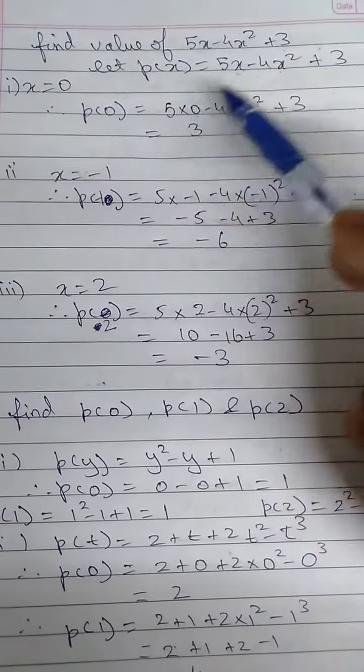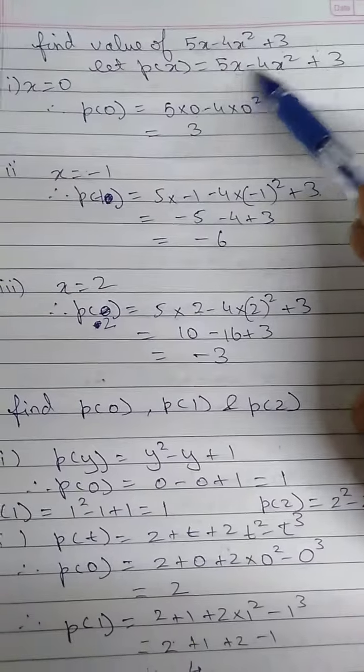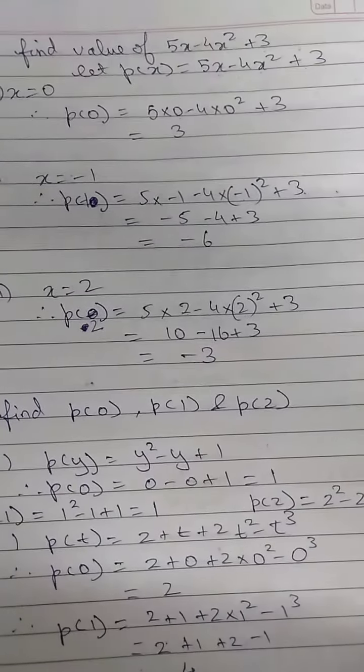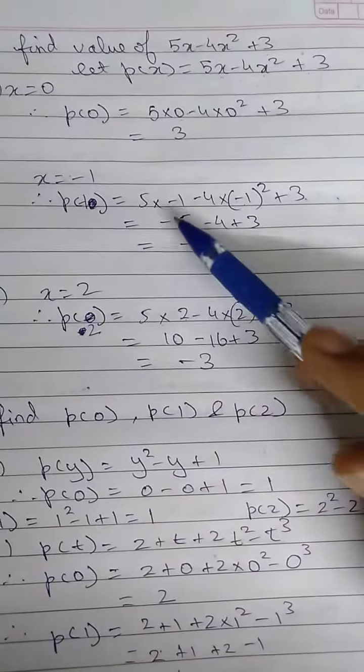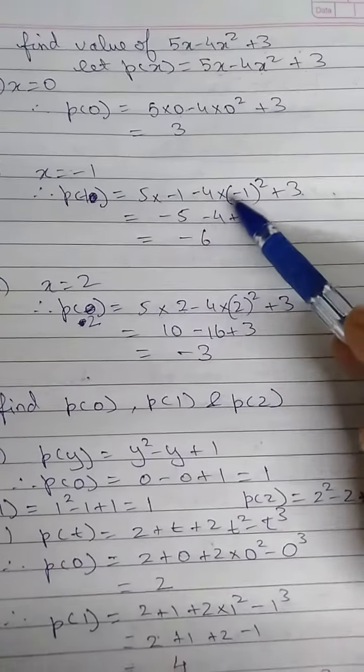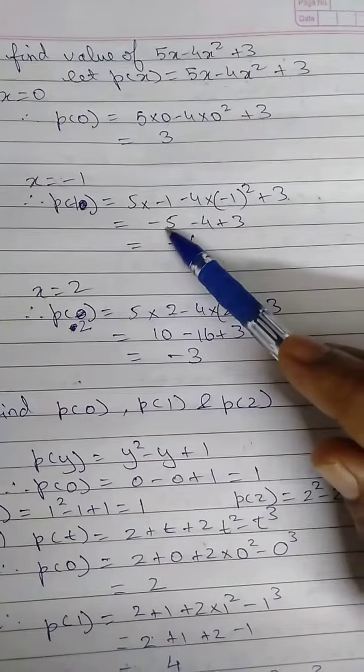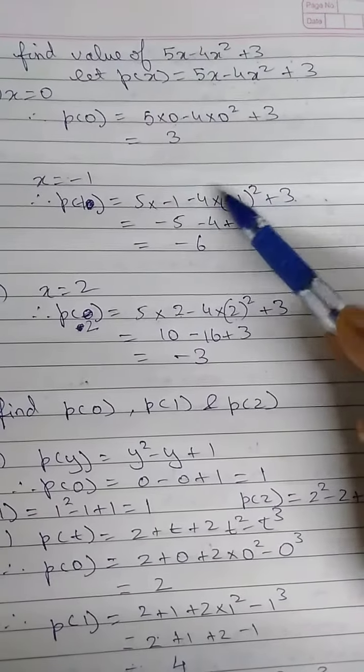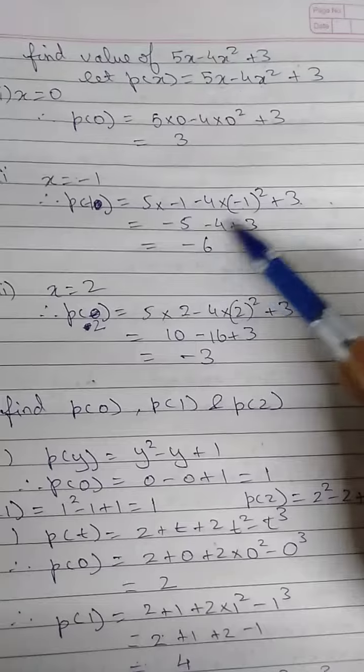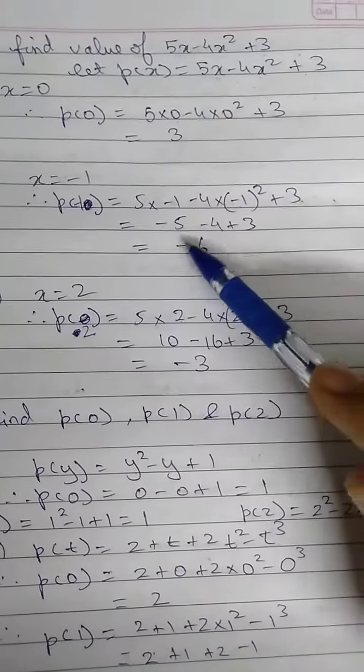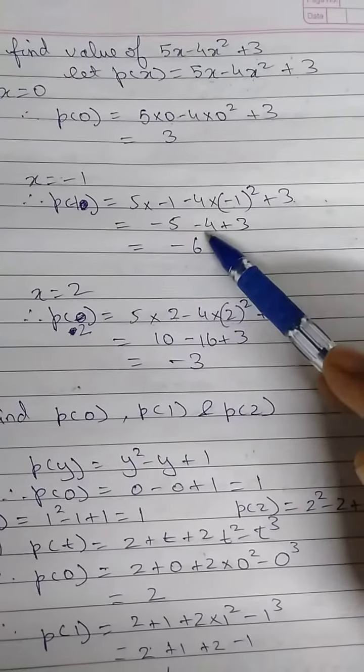Similarly, at x equals minus 1, substitute x equals minus 1 in this expression. Wherever it was x, you will replace that with minus 1, and you get 5 into minus 1 minus 4 into minus 1 whole square plus 3. 5 into minus 1 is minus 5. Minus 1 square will give you 1. 1 into minus 4 is minus 4, and plus 3 as it is. So now this is minus 5 minus 4, minus 9 plus 3 will give you minus 6.